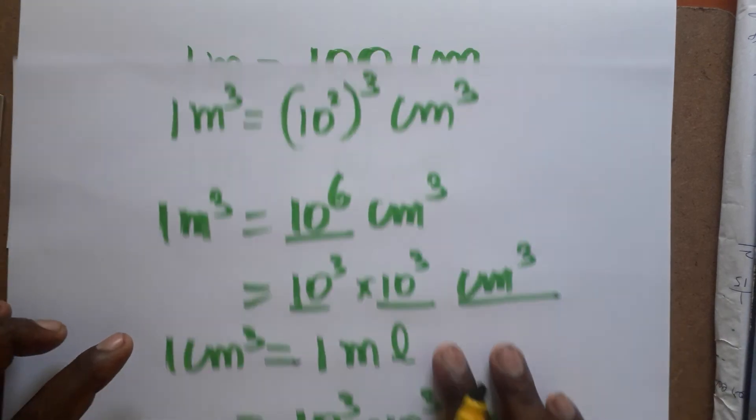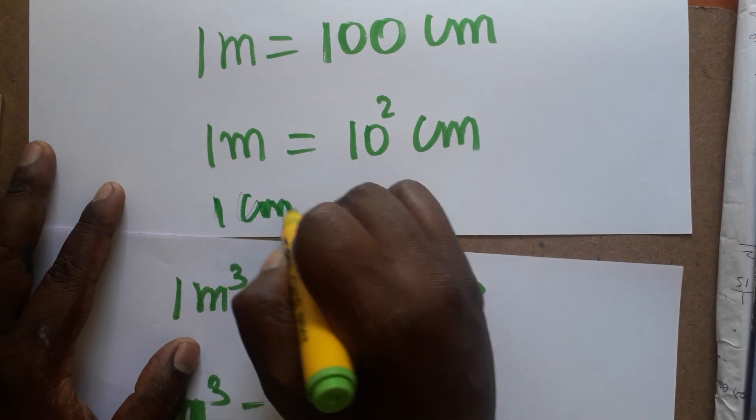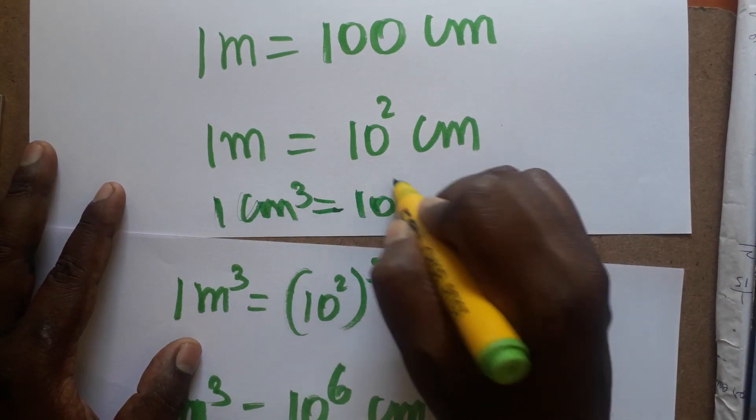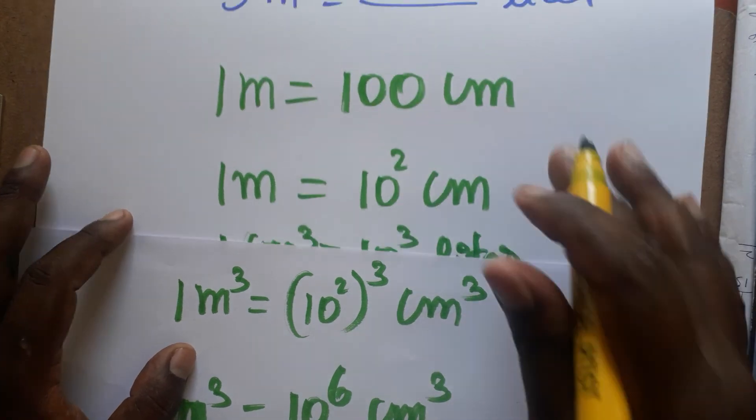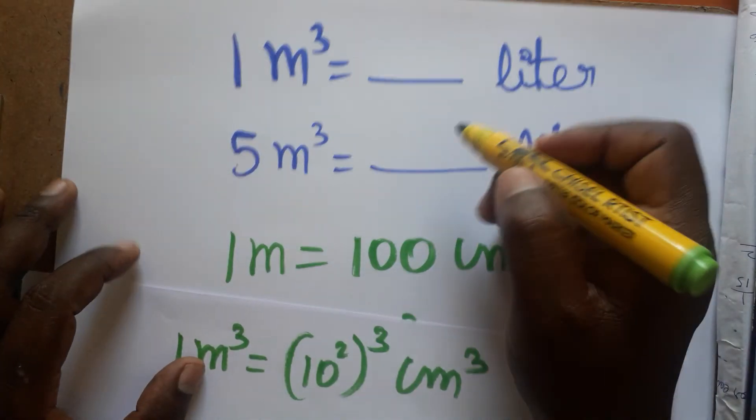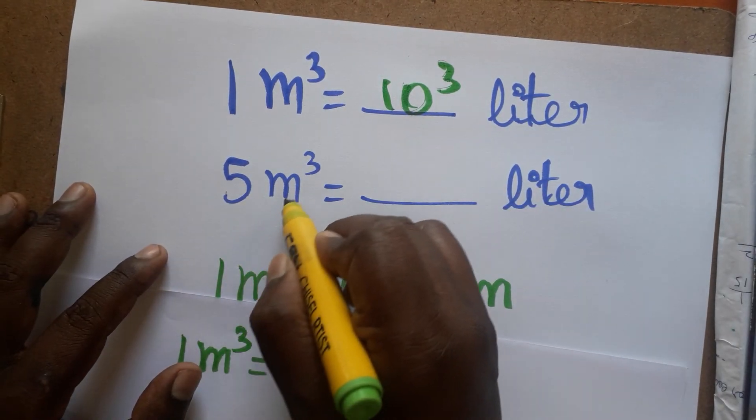1 liter. So we'll get finally, 1 meter cube is equal to 10 power 3 liters. So 5 meter cube is equal to...